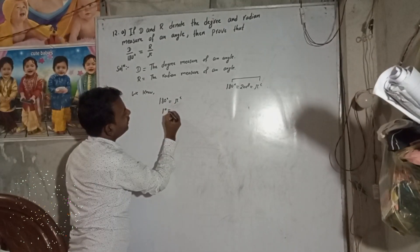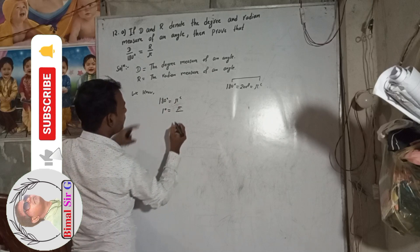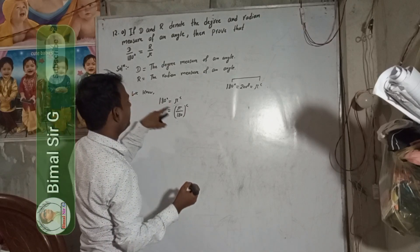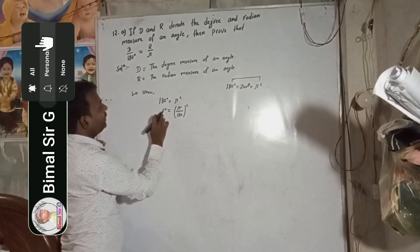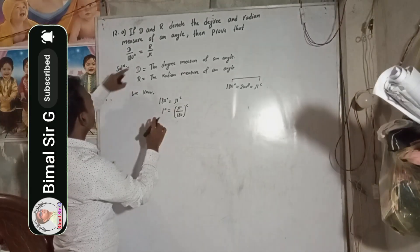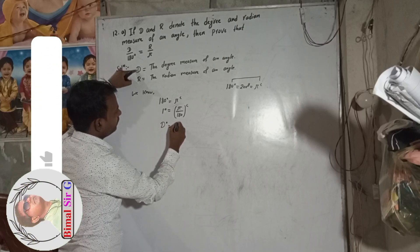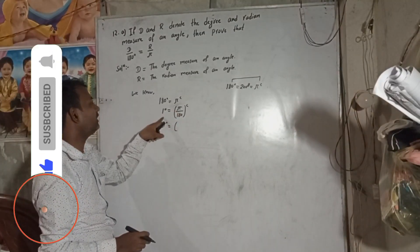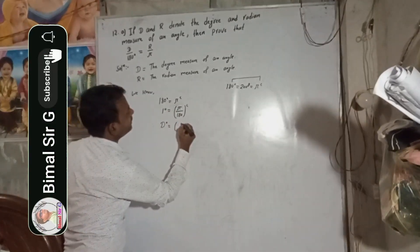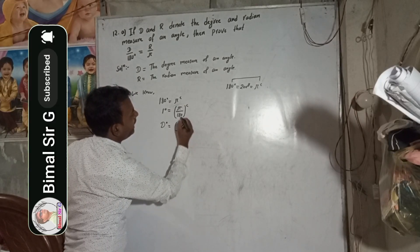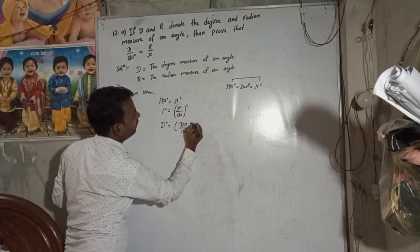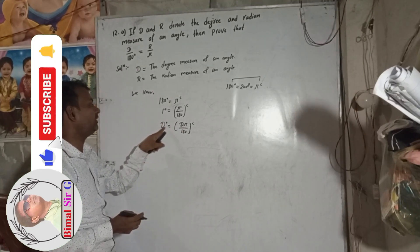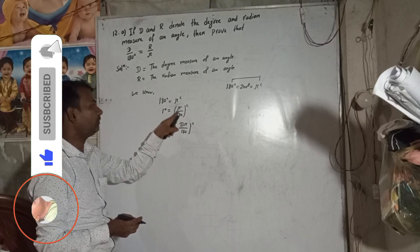Now, one degree is equal to pi by 180 radian. Now in place of this one degree, we write D degree. So D degree is equal to — this is the unitary method — there is one, so we multiply by D on both sides. This will give us D pi by 180 radian.